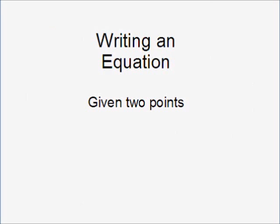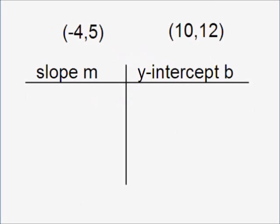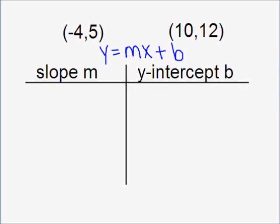This lesson is on writing an equation of a line given two points. Suppose I want to write the equation of the line that contains the two points negative four, five and ten, twelve. Our slope-intercept form of a line tells us that y is equal to slope m times x plus y-intercept b. The form itself tells us that we can't write our equation until we know the slope and the y-intercept.